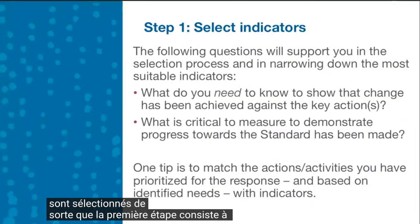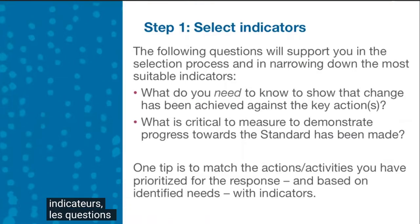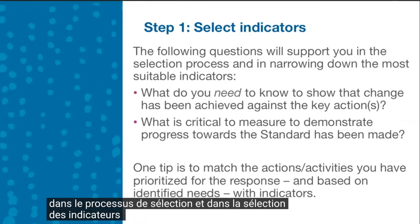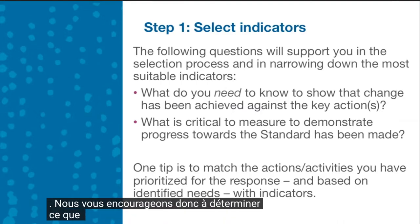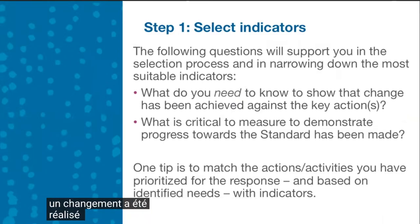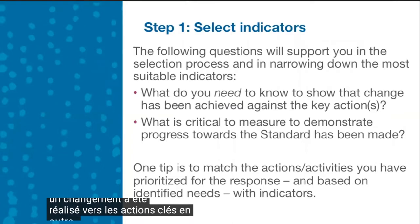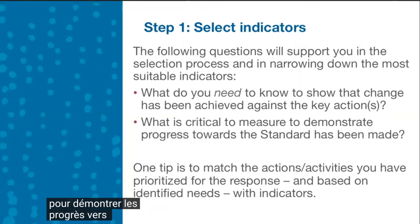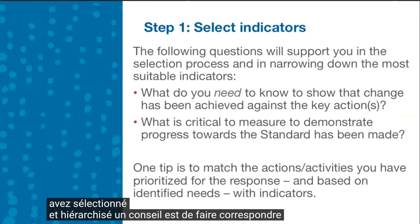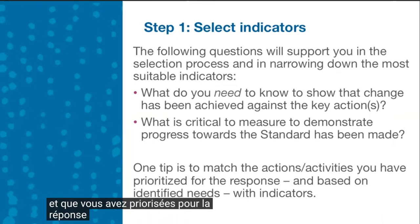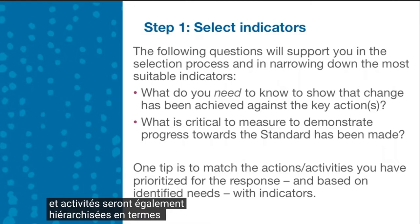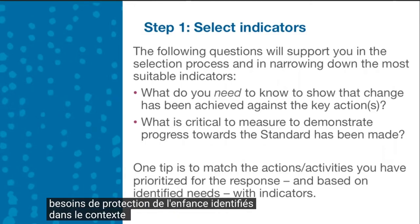The first step is to select the indicators. The following questions will support you in the selection process: determine what you need to know to show that change has been achieved towards the key actions, and what is critical to measure to demonstrate progress towards the standard you have selected. One tip is to match the actions and activities you plan to implement with the indicators, prioritized in terms of the identified child protection needs in the context where you are working.